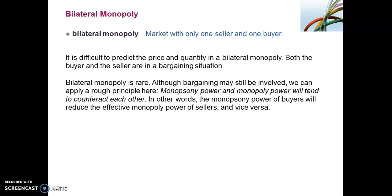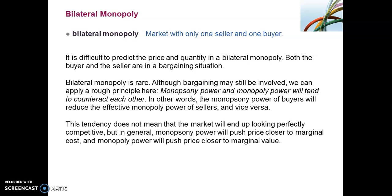The rough principle is that one has the ability to cancel out the other to some extent — monopsony power and monopoly power will tend to counteract each other, almost cancel each other out. The monopsony power of the buyers tends to reduce the effect of the monopoly power of the sellers, and vice versa. This tendency does not mean the market will end up looking like a perfectly competitive market, but in general, monopsony power will push the price closer to marginal cost. Remember, for the monopolist, their gain came from the difference between marginal cost and price — price was greater than marginal cost. For the monopsonist, their markdown came from price being lower than marginal value. Now with monopoly power, it will tend to push that price closer to marginal value.